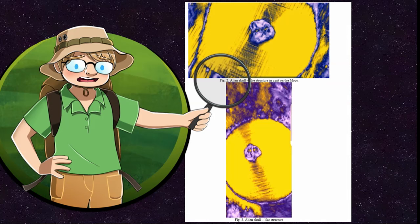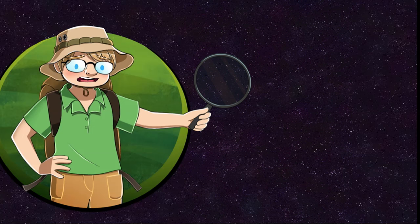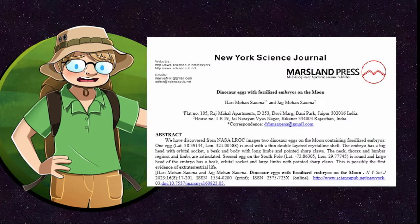Anyway, now we enter the final paper that these two astrobiological geniuses have published so far. This one claims to have found evidence for an actual dinosaur egg with an embryo that contains a beak, limbs, and claws. Again, this is at a resolution of 70 meters per pixel. So, kaiju-sized, huge supposed dinosaur.